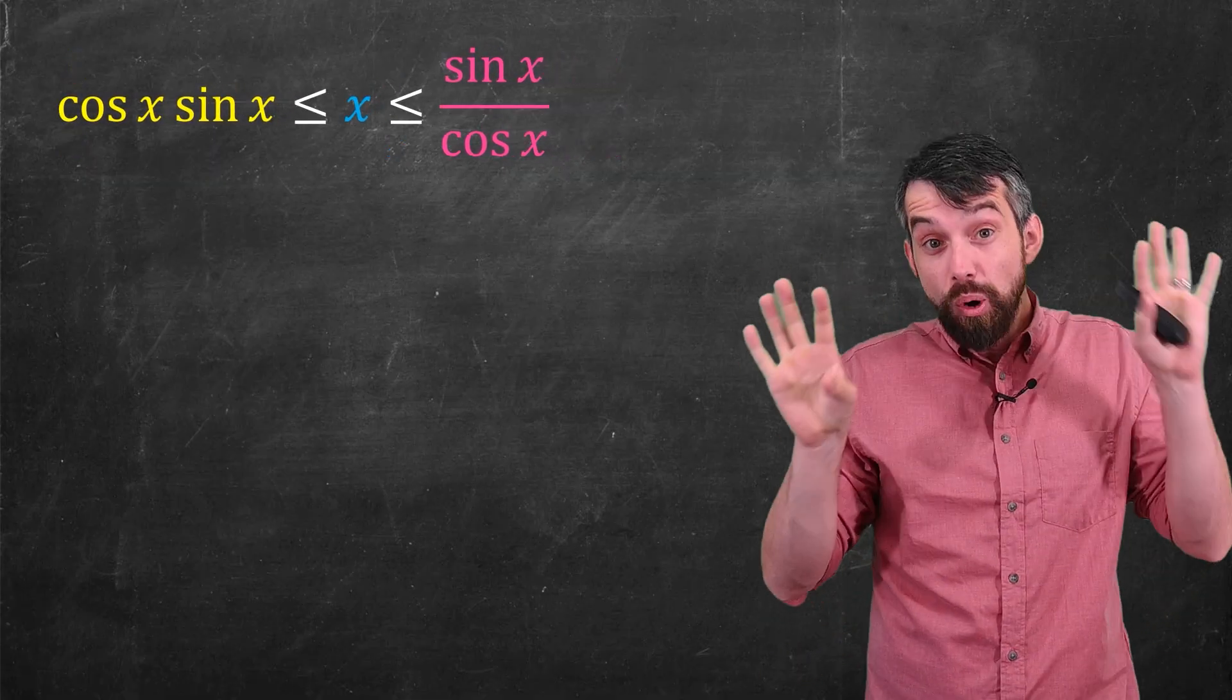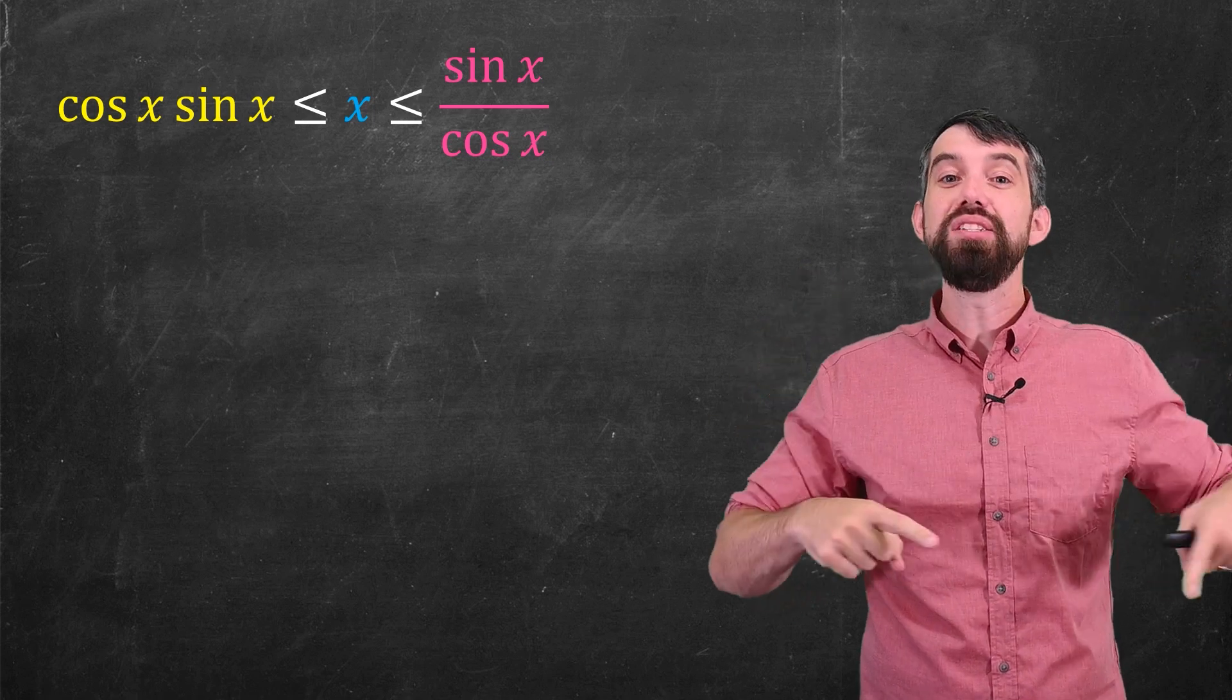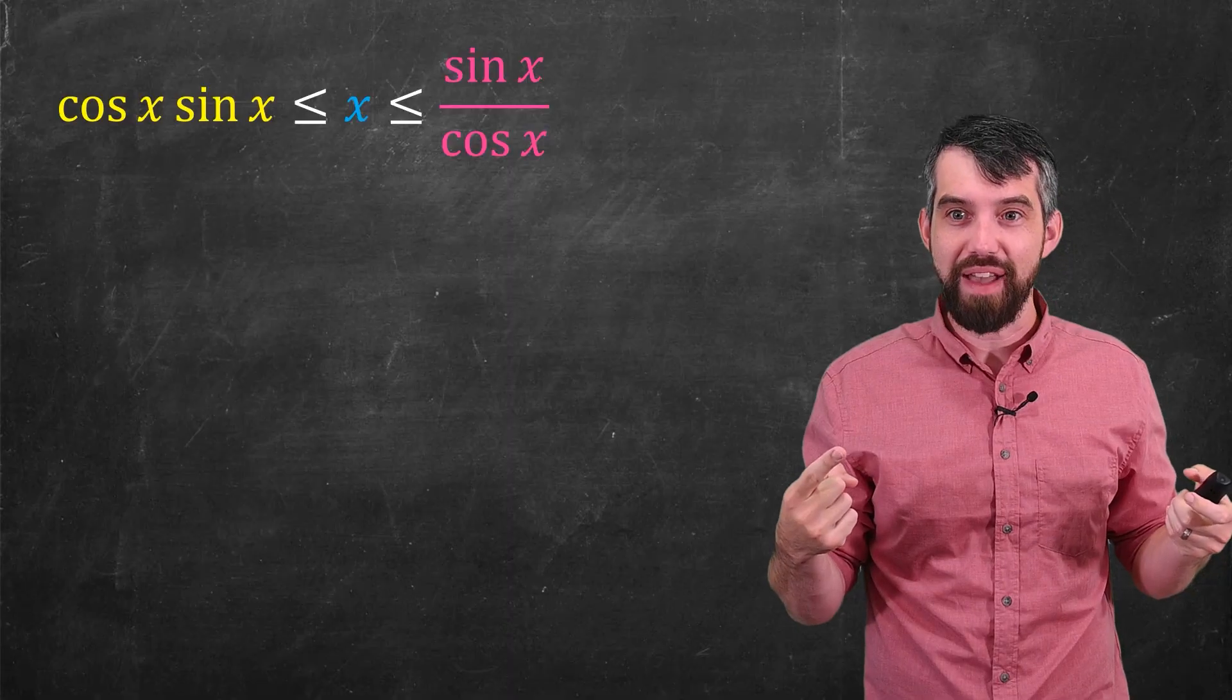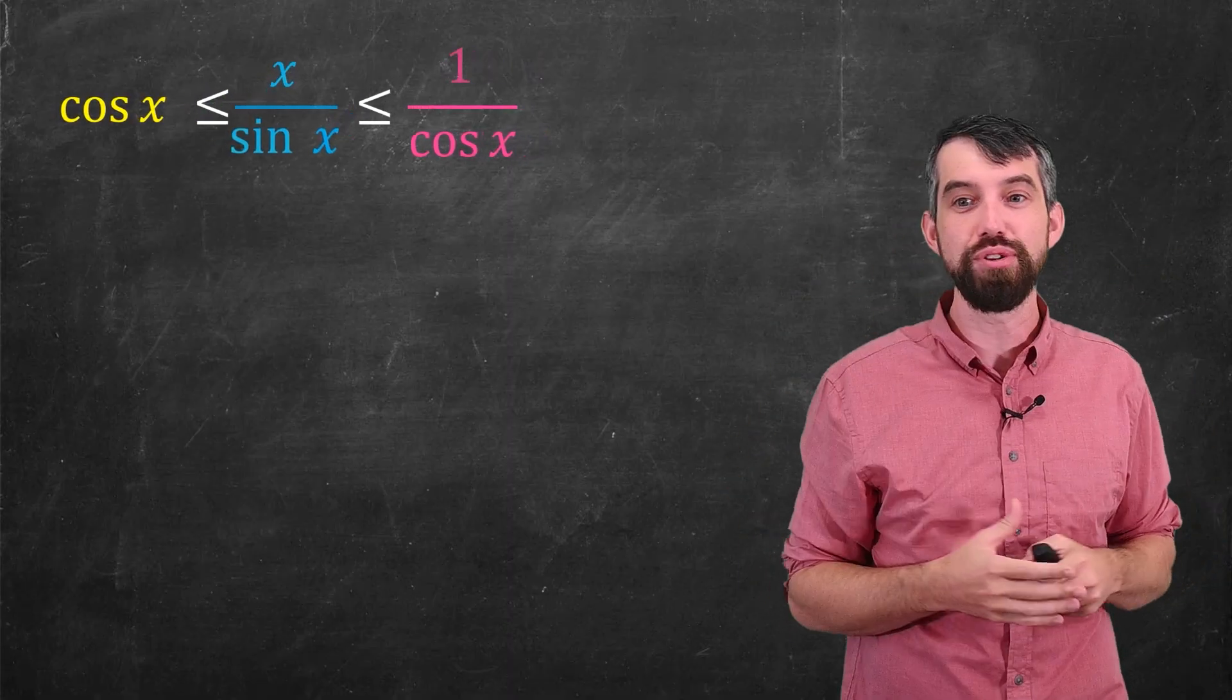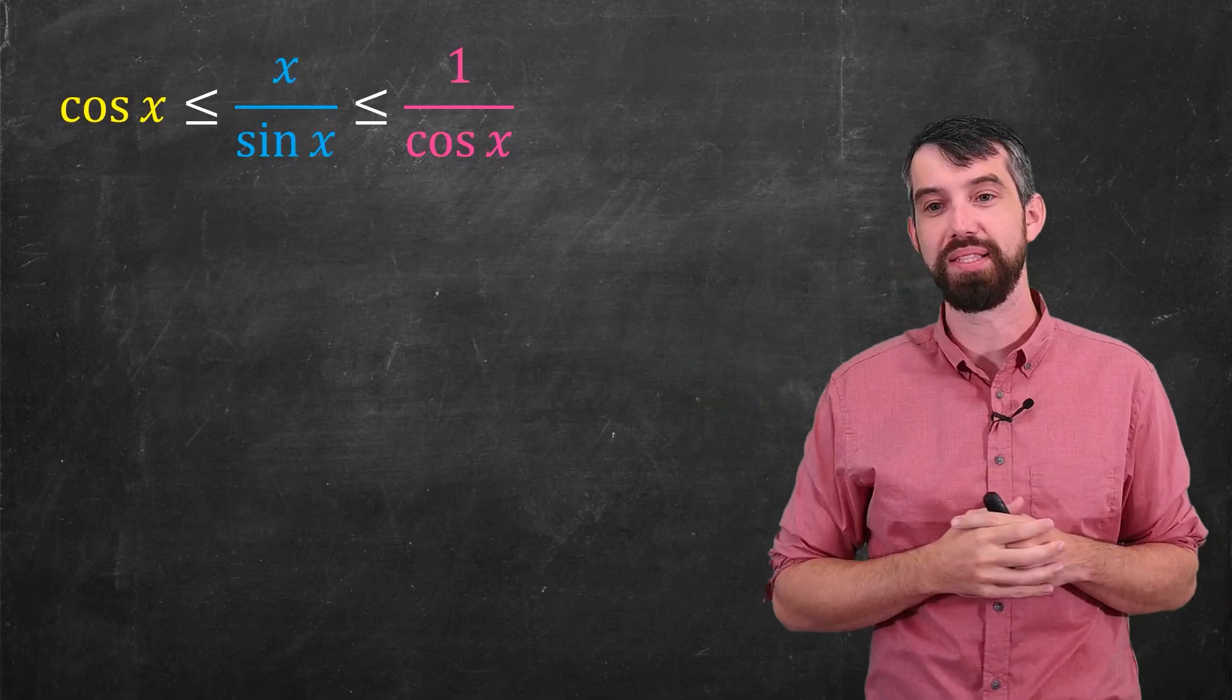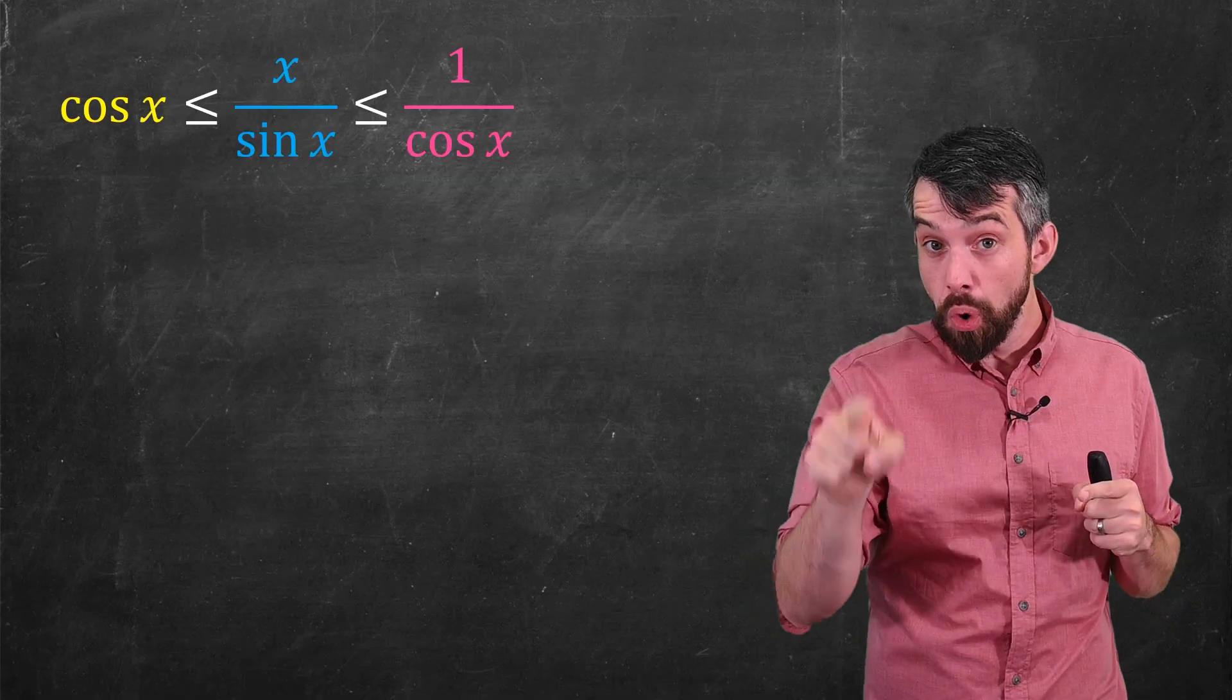Next, I see on both sides I have a sine of x. So I'm going to divide out by sine of x on all three sides, so then the outside is going to go away and I have to introduce it in the middle here, so it divides out by the sine of x.